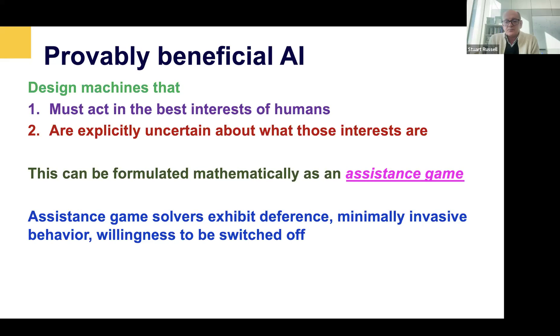We can turn those principles fairly straightforwardly into a mathematical framework called an assistance game. Basically the machine's job is to maximize the payoff of the human, but the machine doesn't know what the human's payoff function in the game actually is. It's by observing the choices that the human makes in the game that the machine learns more about what the human's payoff function is.